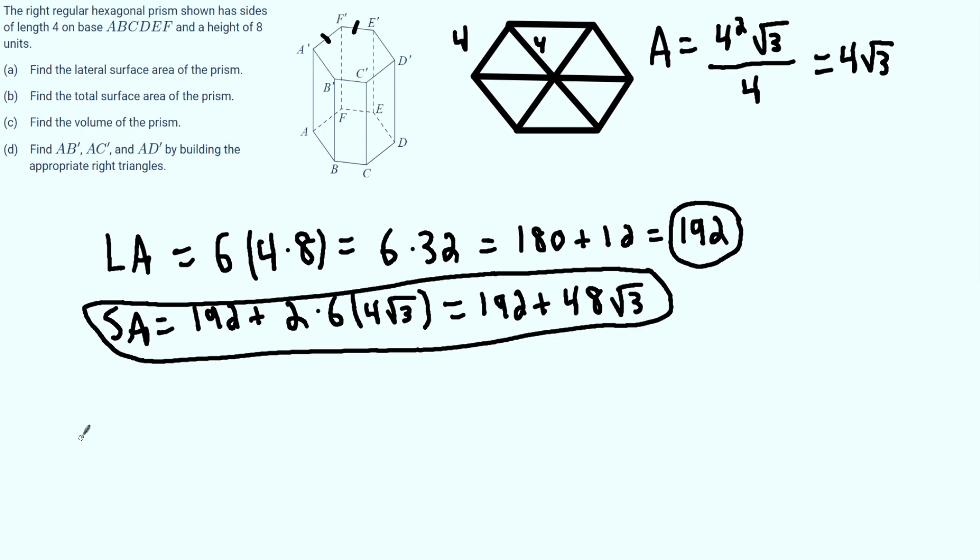Now it would like us to find the volume. The volume, as we have previously defined it, is the area of the base times the height of our object. So, the area of our base is 6 times 4 square root of 3. This just comes from the area of the equilateral triangle being 4 times the square root of 3, and there are 6 triangles in the hexagon. We're going to multiply that with the height of the prism, which is 8.